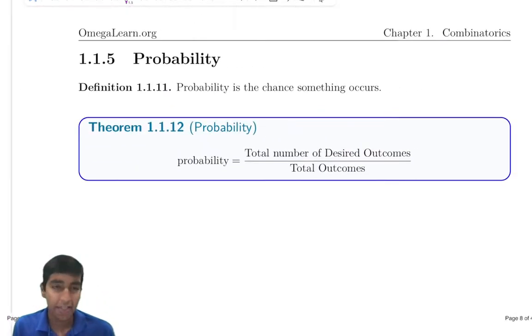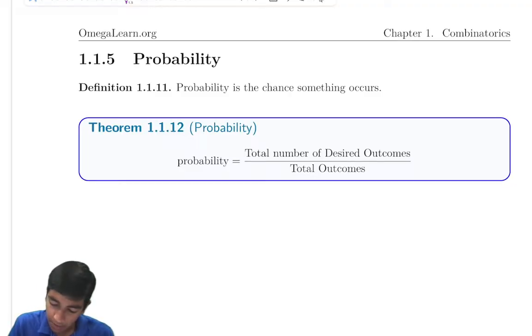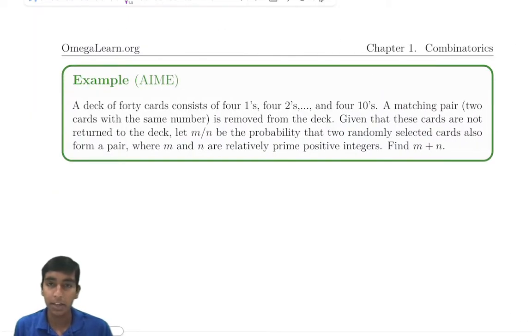Next, there's probability, and that's just the chance, so it's just the desired outcomes over the total outcomes. Now let's take a look at an interesting probability example. A deck of 40 cards consists of four 1s, four 2s, four 3s, and four 10s. A matching pair, two cards with the same numbers, is removed from the deck. Given that these cards are not returned to the deck, let m over n be the probability that two randomly selected cards also form a pair, where m and n are relatively prime positive numbers.